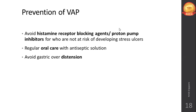Gastroesophageal reflux and regurgitation — the escape of gastric contents into the esophagus — can occur when the stomach is overdistended and completely full of fluid. If regurgitation takes place and contents go directly into the trachea, that will lead to aspiration and could lead to pneumonia.